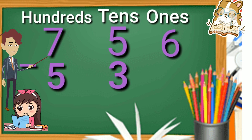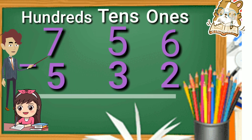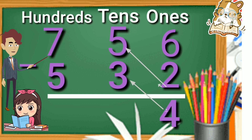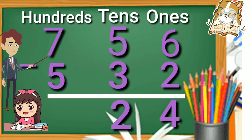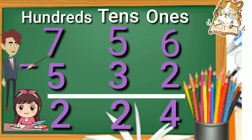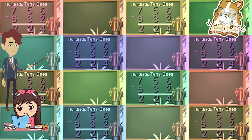The amounts are seven hundred fifty six minus five hundred thirty two. First we subtract ones: six minus two is equal to four. Then we minus tens: five minus three is equal to two. Last we minus hundreds: seven minus five is equal to two. So seven hundred fifty six minus five hundred thirty two is equal to two hundred twenty four.